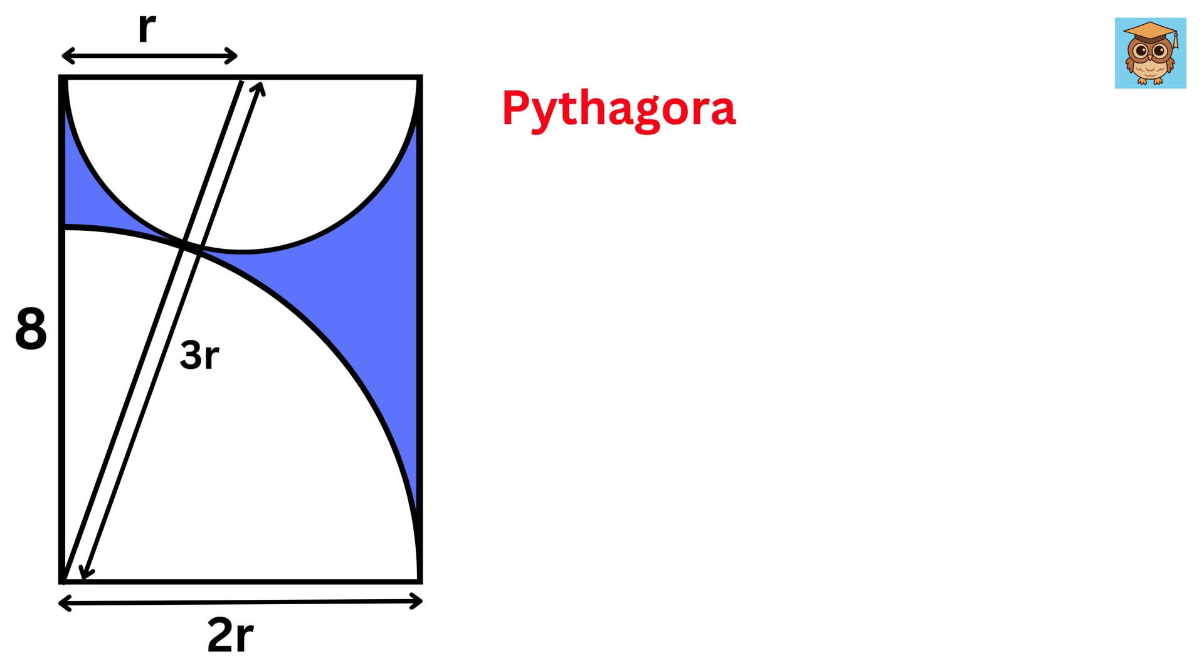So we can use the Pythagoras theorem to solve for r. We have r square plus 8 square equals 3r whole square. So r square plus 64 equals 9r square. This gives 9 minus 1 or 8r square equals 64 or r square equals 8, which means r equals root 8 or 2 root 2.